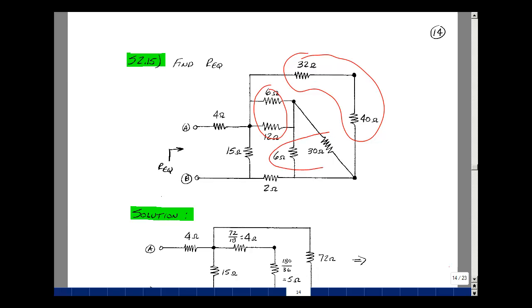These two are also in parallel. They share the same two nodes. Here's one node, here's the second node. So again, the product over the sum, that would be 180 divided by 36, and that turns out to be 5.